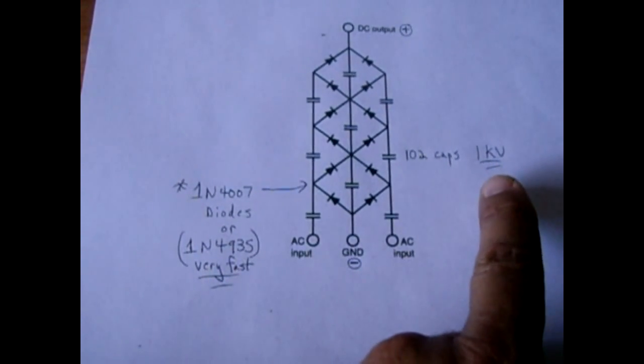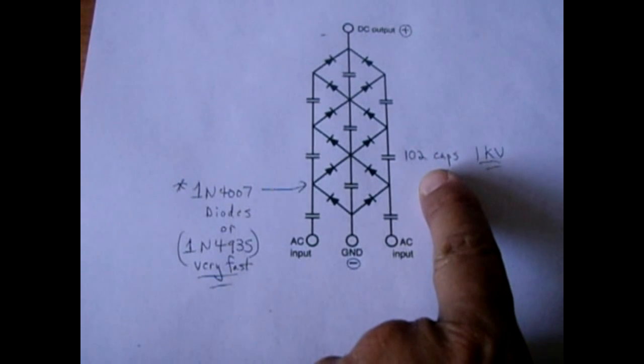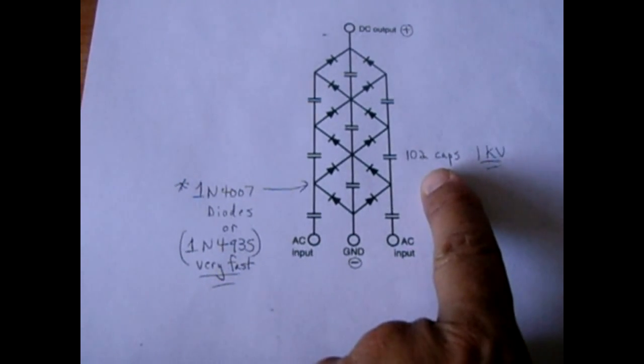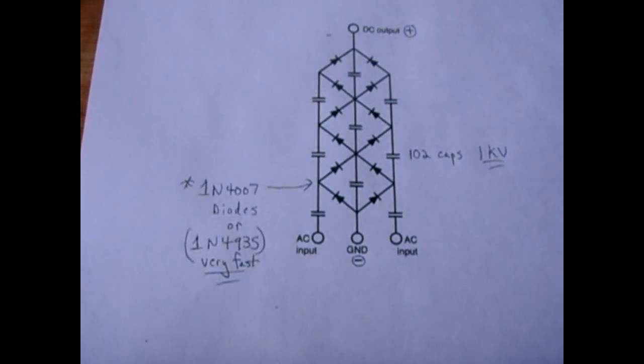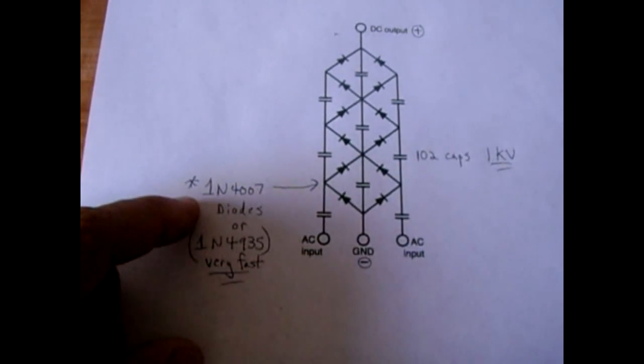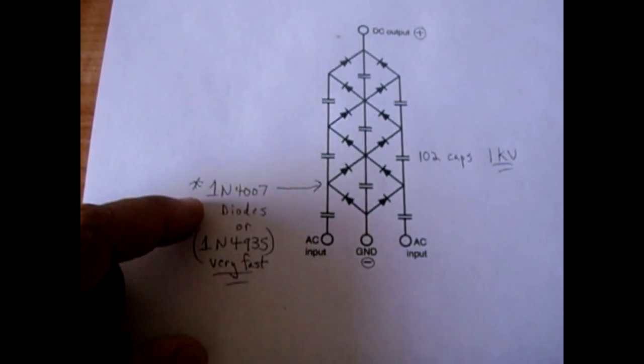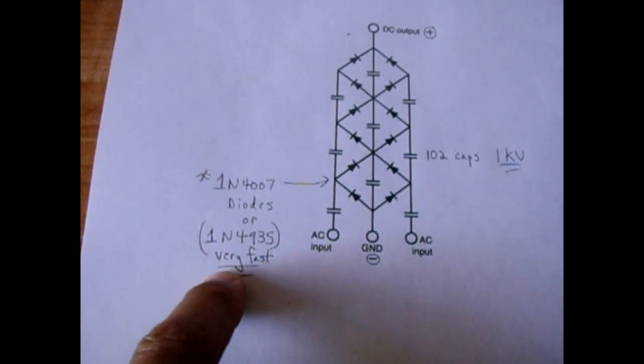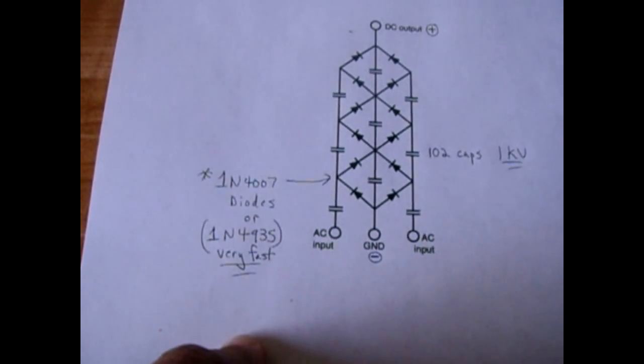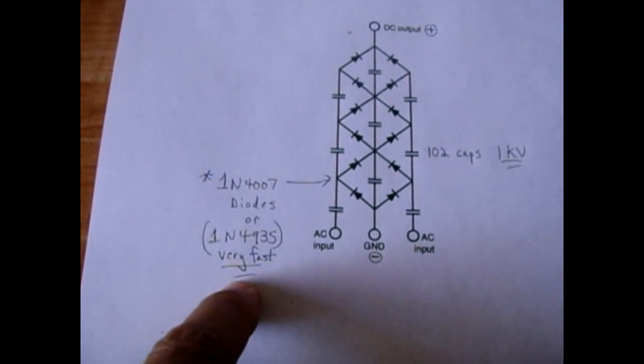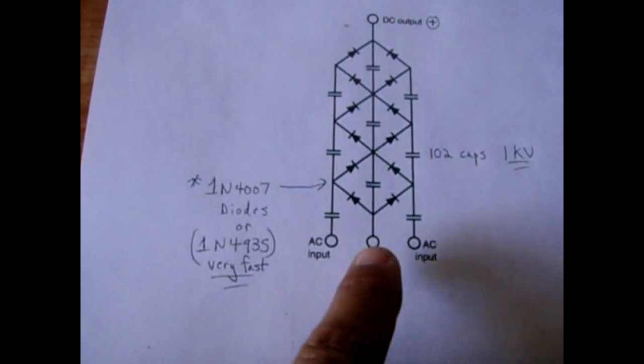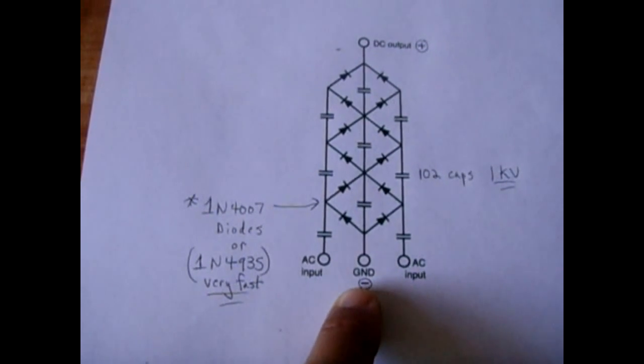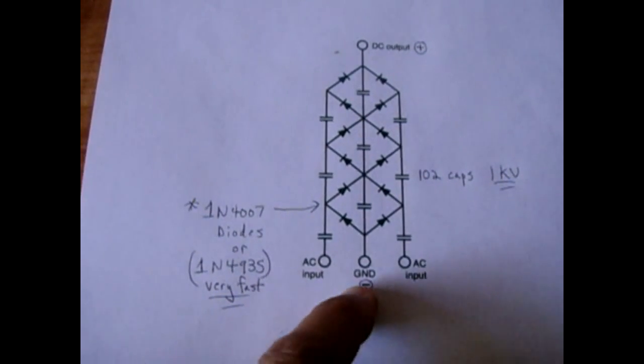All the capacitors are rated roughly 1000 volt and I use a 102 capacitor which is a 0.001 microfarad, and the diodes are 1N4007 rectifier diodes. Even better than that are faster diodes which is a 1N4935 which I used in my Geiger counter circuit.